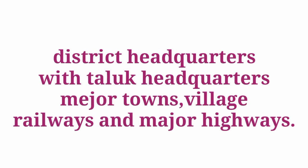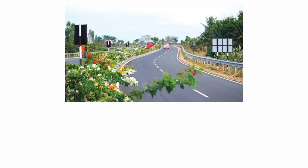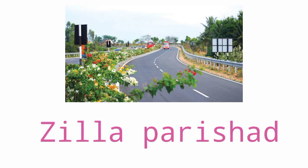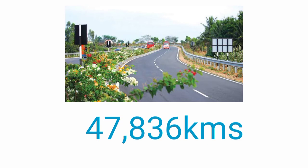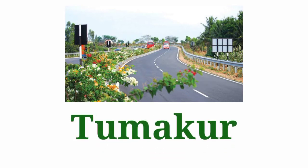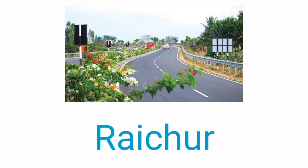The third kind of road is district roads. These roads link district headquarters with taluk headquarters, major towns, villages, railways, and major highways. The construction, maintenance, and supervision of these roads are under the Zilla Parishad. Karnataka has 47,836 kilometers of district roads. Tumkuru district has the maximum district roads, while Raichur district has the least.